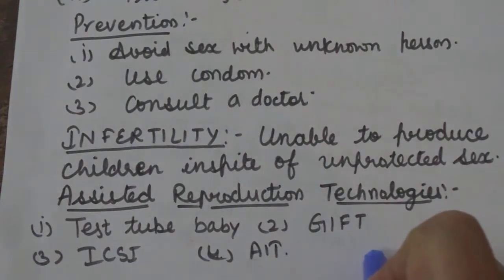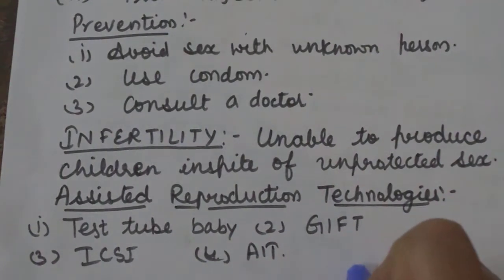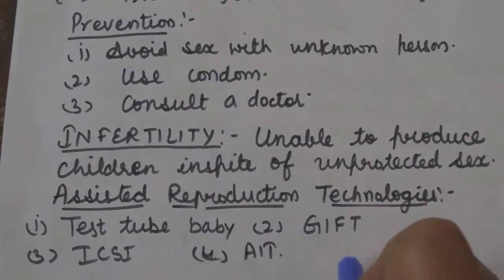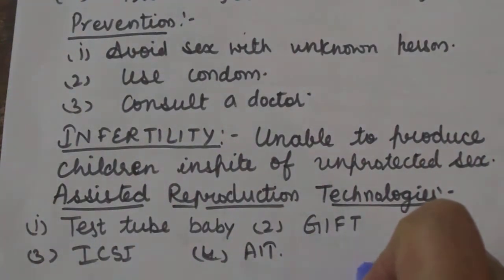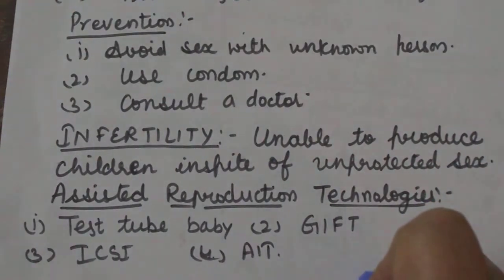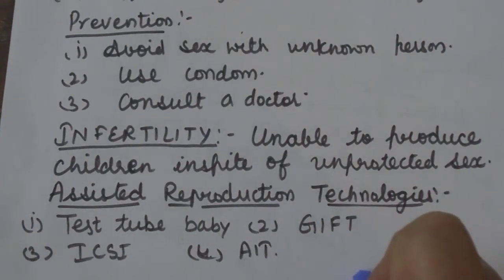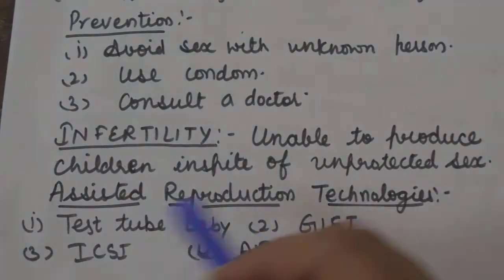Next is GIFT — Gamete Intra-Fallopian Transfer. This method is used in females who cannot produce ova but can provide a suitable environment for fertilization and further development of the embryo in the oviduct. An ovum from a donor female is surgically removed and introduced into the fallopian tube of such a female, who then accepts sperms from her husband during natural copulation.